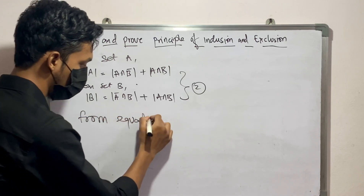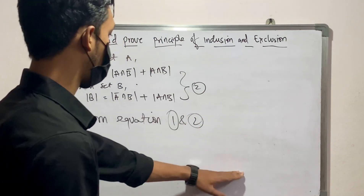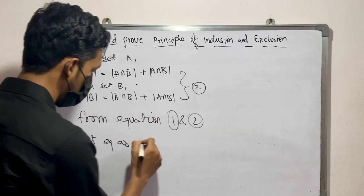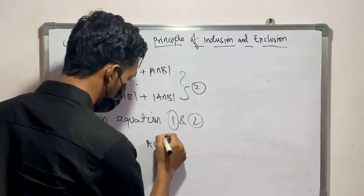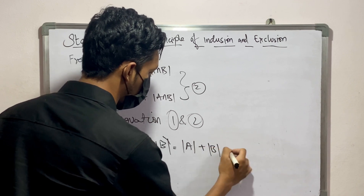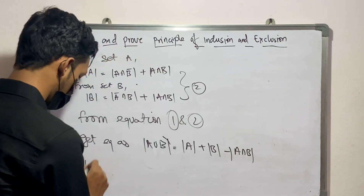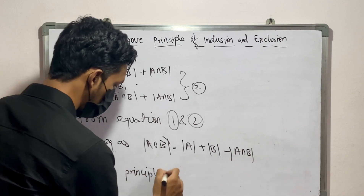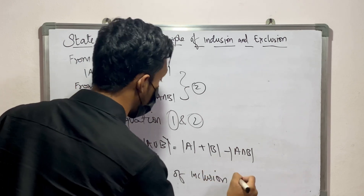From equations one and two, we get the combined equation: mod(A union B) equals mod A plus mod B minus mod(A intersection B). So we have proved the statement, which is the Principle of Inclusion and Exclusion.